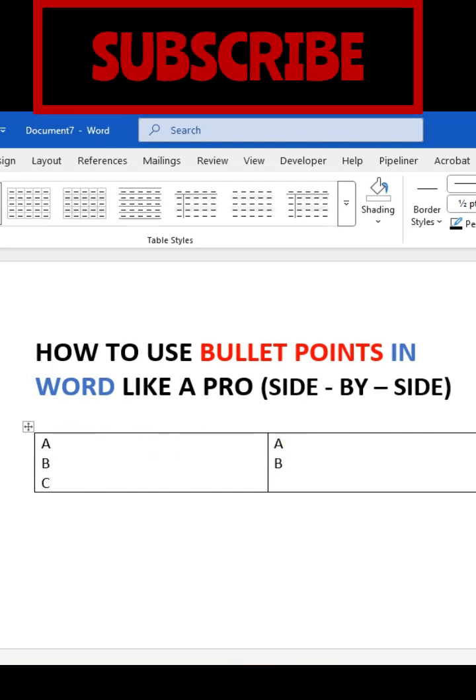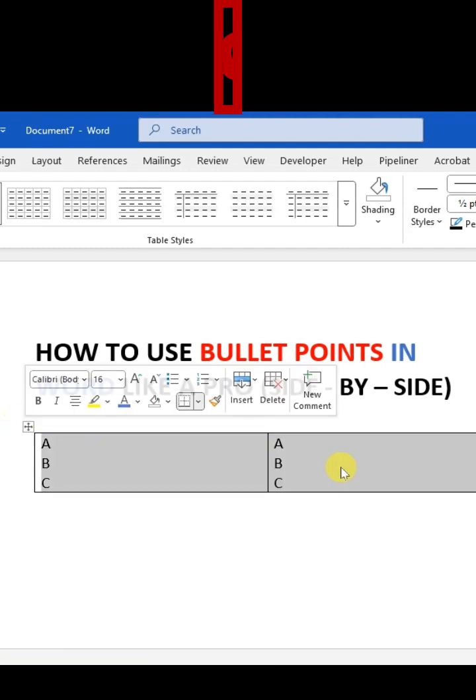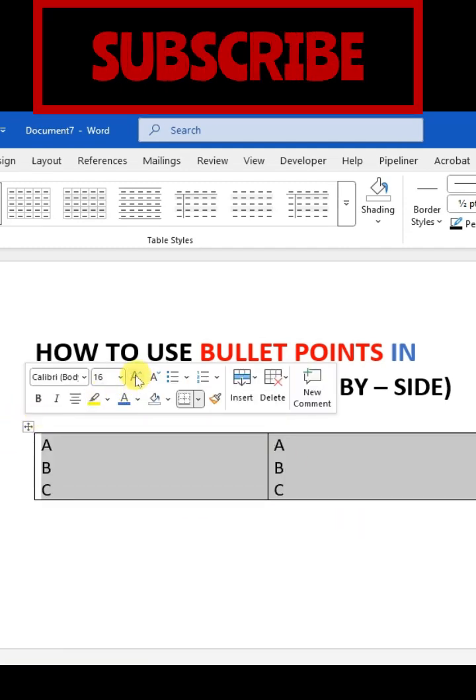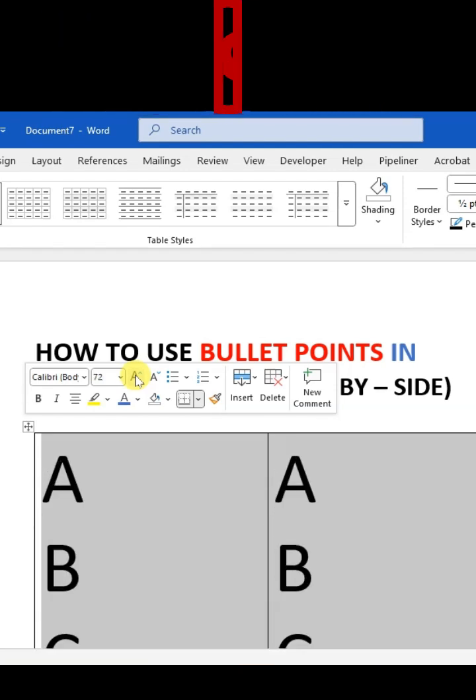Then I click on this box and select both lists, and here I just click on it and increase the font size. You can see the changes over here.